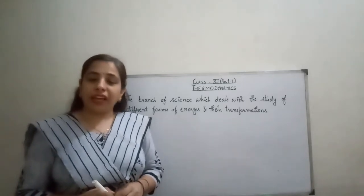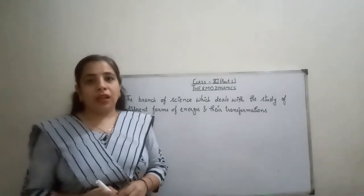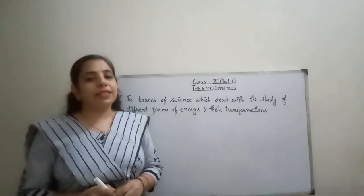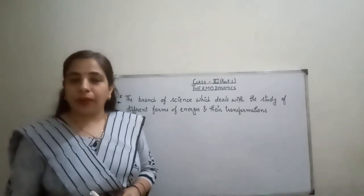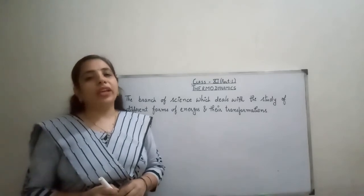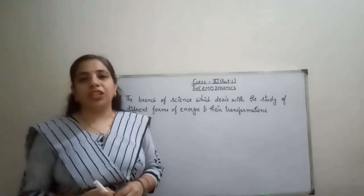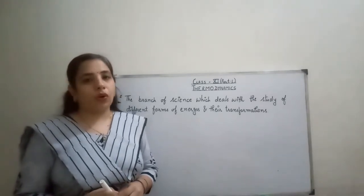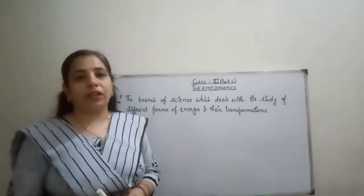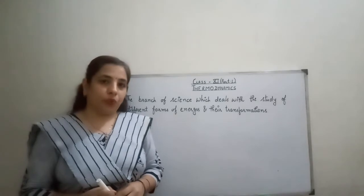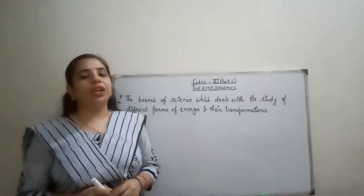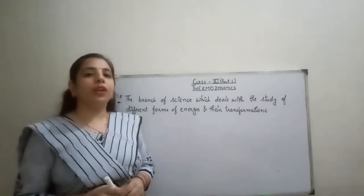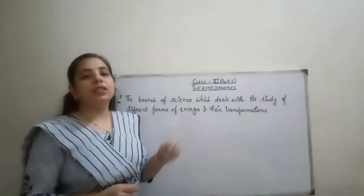Has a chemical change taken place? Why did that chemical change occur? To what extent has a chemical change taken place? And how can we measure the energy changes which are accompanied with the changes? These are all the important things which we need to know. But before that, we are going to discuss some basic terms which we are going to use in this chapter.